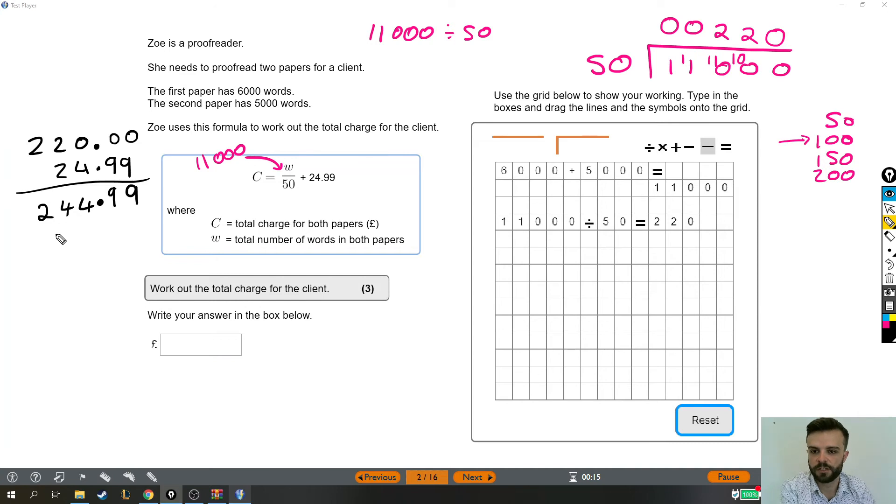And then 2 and nothing is 2. So the next little thing that we've just completed was 220 plus 24.99. And the answer equaled 244.99. So in money we say that's £244.99. And that's it. There's your answer. 244.99.